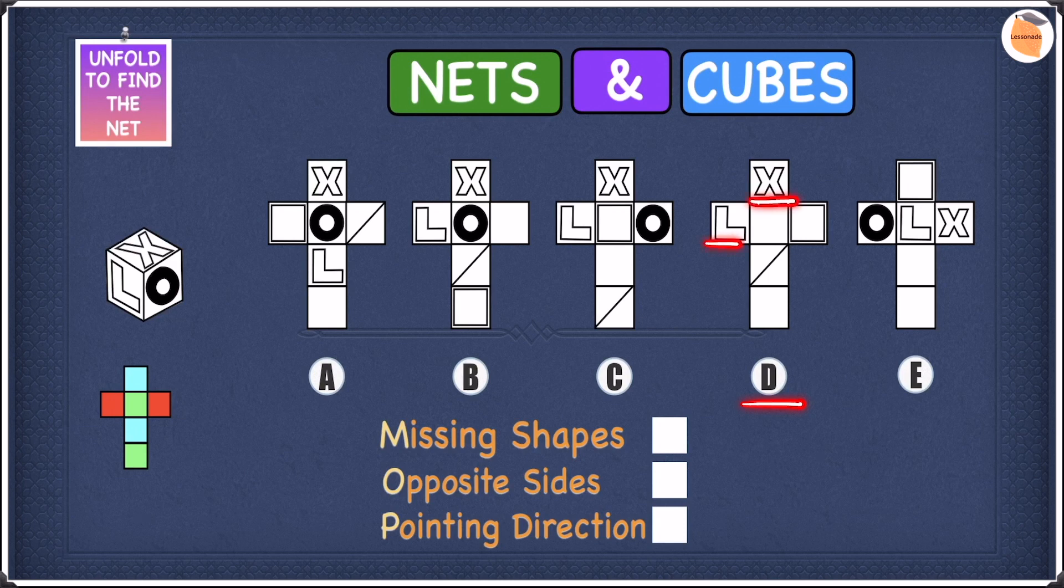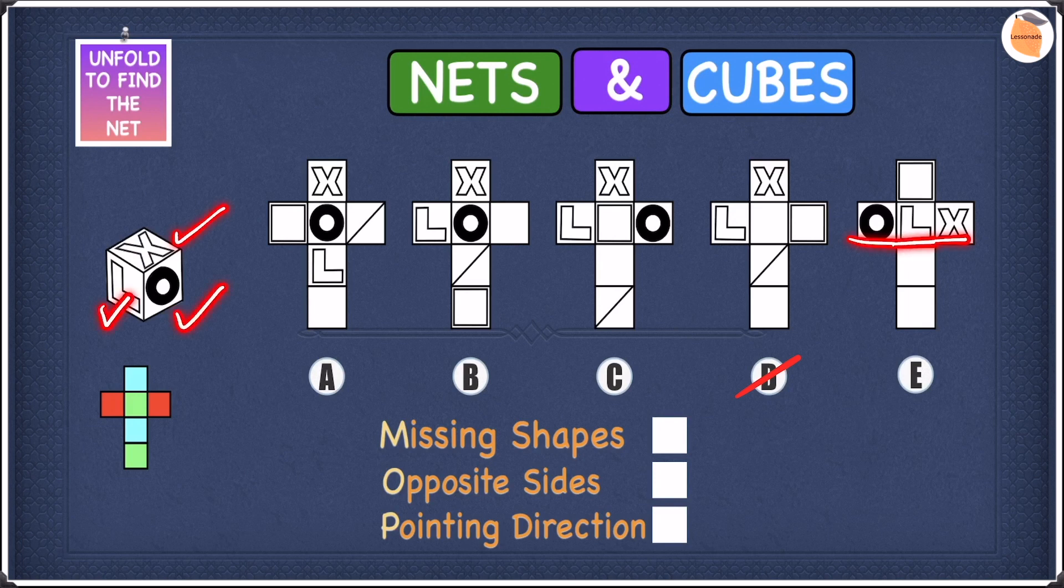We have the X and the L shape but we do not have the O shape. Because we are missing one of the shapes and we're meant to have all three of the shapes we can cross off D. So let's cross off D and let's move on to E. In E we have the X shape, we have the O shape and we have the L shape. So E is fine.